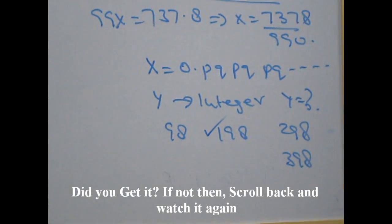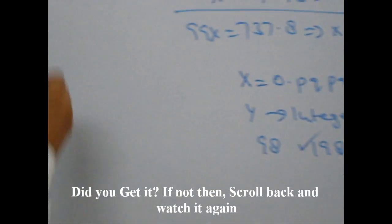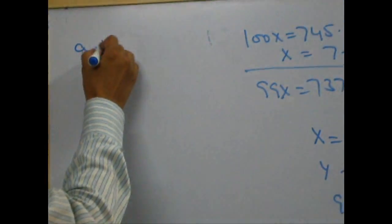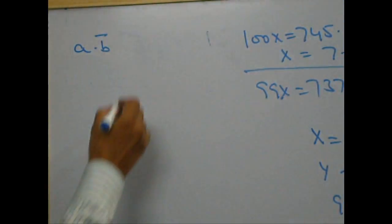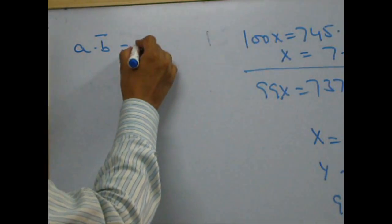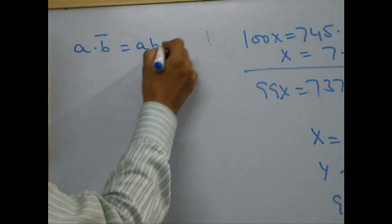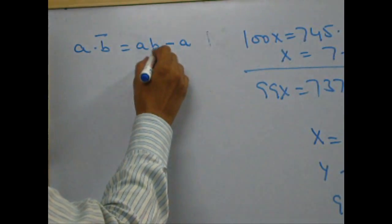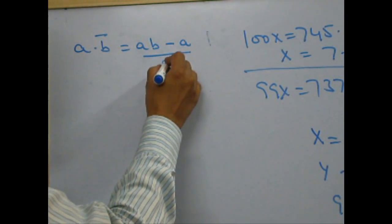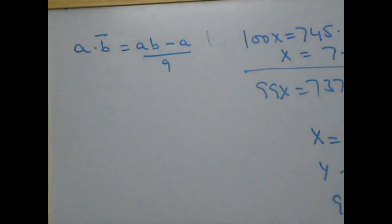Now let's make it a trick of what we just learned. I say a point b bar if that's a rational number given to us then its p by q form is ab that is all the digits minus a that is the digits which are not repeating divided by as many 9 as the number of digits repeating.